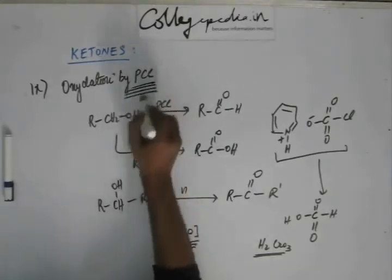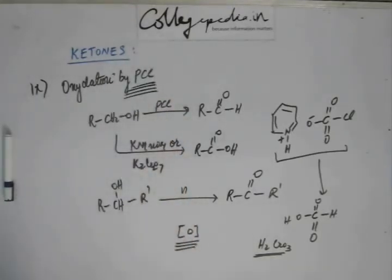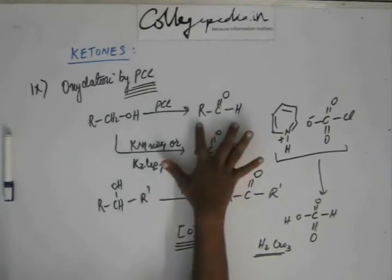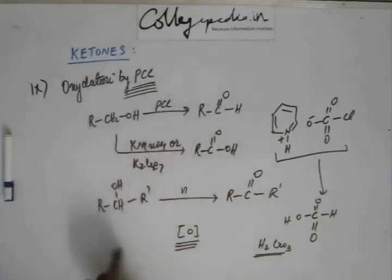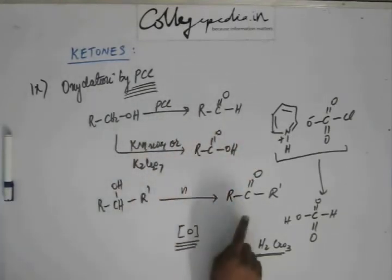PCC, Pyridinium Chlorochromate. They will write PCC and they will ask what will be the final product. It is an important reagent. You have to know this. So the bottom line of this reaction is PCC is a reagent to produce cleanly aldehyde from 1 degree alcohol. If it's a 2 degree alcohol, that will result in ketone.